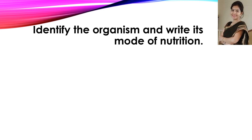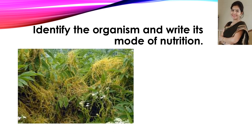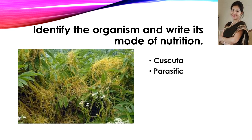Now the next question: identify the organism and write its mode of nutrition. This is Cuscuta, or Amarbel, and the mode of nutrition is parasitic. It does not photosynthesize — it does not produce its own food; it depends on other plants for its food requirements.